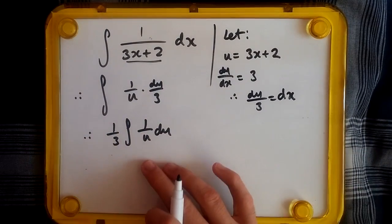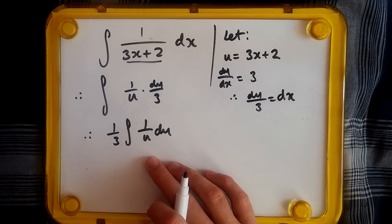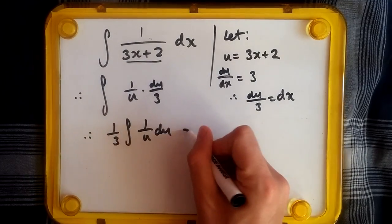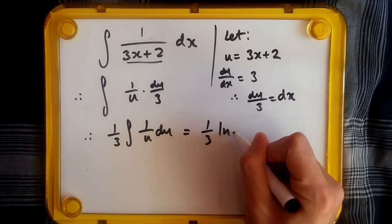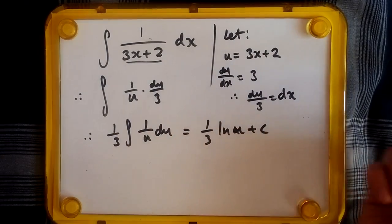And that's it, guys. 1 over u is just 1 over u, 1 over x is a straight up standard integral. This should give us a 1 over 3 outside, and 1 over u should instantly give us a log u. And of course, plus c.